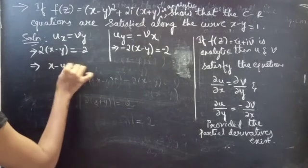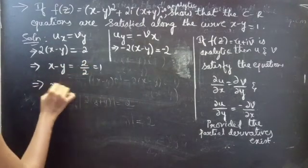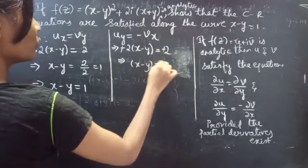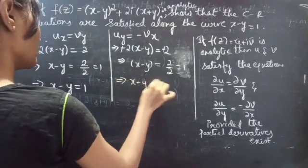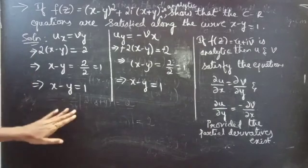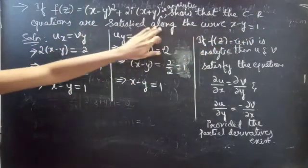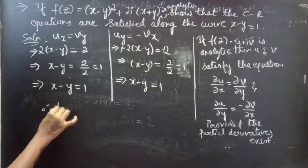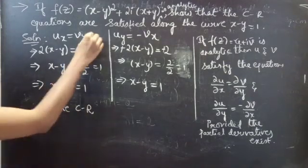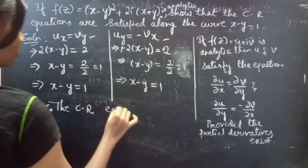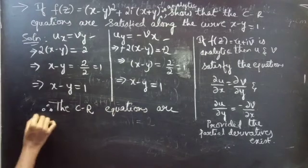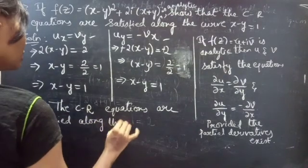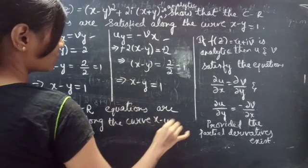From both equations, we get x - y = 1. Therefore, the CR equations are satisfied along the curve x - y = 1.